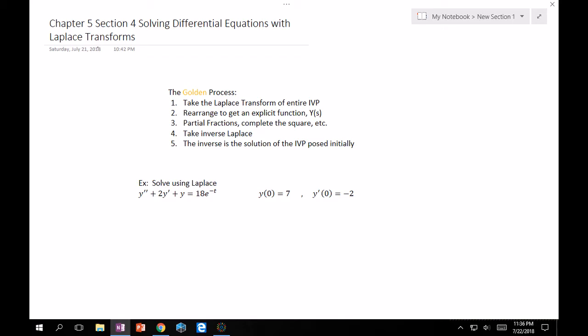I have summarized the golden process, as I like to call it, right here. Basically, you have to take the Laplace Transform of the entire IVP, rearrange it to get an explicit function Y of S, which I think we've done that before. Use whatever you need - partial fractions, complete the square, any sort of algebraic manipulation to get it into something that you can take the inverse Laplace of, which is step 4. And then, the inverse, whatever it may be, is actually the solution of your IVP posed initially, which is nice.